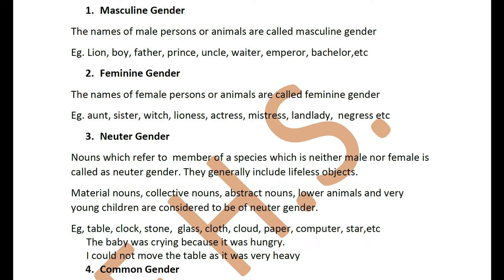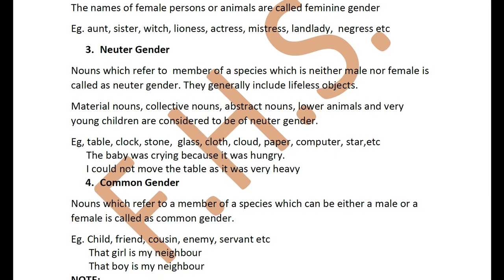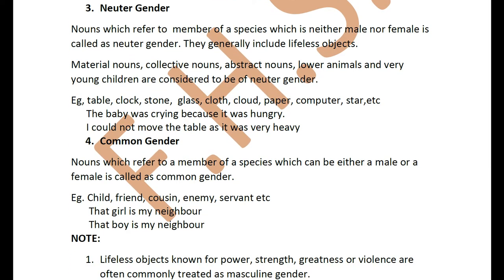Neuter gender: nouns which refer to members of a species which is neither male nor female is called neuter gender. They generally include lifeless objects, material nouns, collective nouns, abstract nouns. Lower animals and very young children are considered to be of neuter gender. Like when you say 'I found a puppy on the road, it was crying with pain' — you don't say she or he was crying. Similarly, 'the baby was crying because it had hurt its toe' — you say it, because the baby is very small.